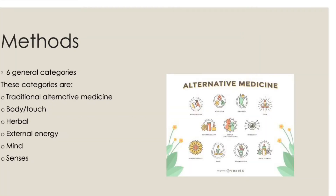Alternative medicine methods can be broken down into six general categories: traditional alternative medicine, body/touch, herbal, external energy, mind, and senses. Traditional alternative medicine is the group of practices that is most commonly heard of and accepted as successful in today's society.